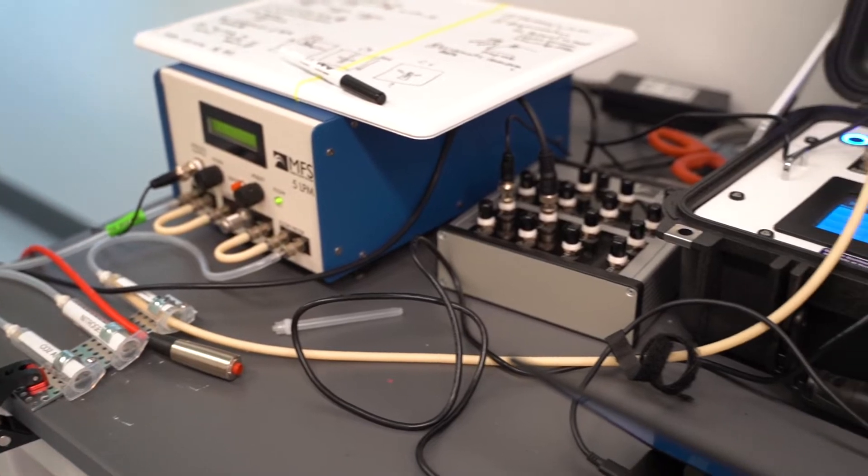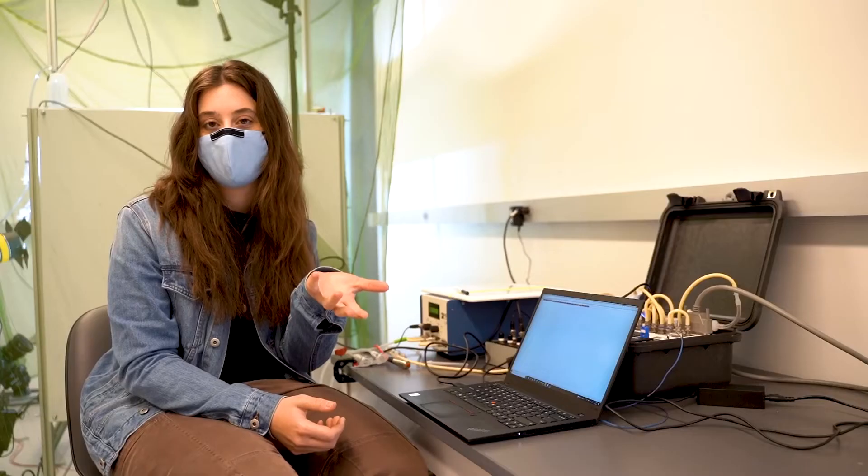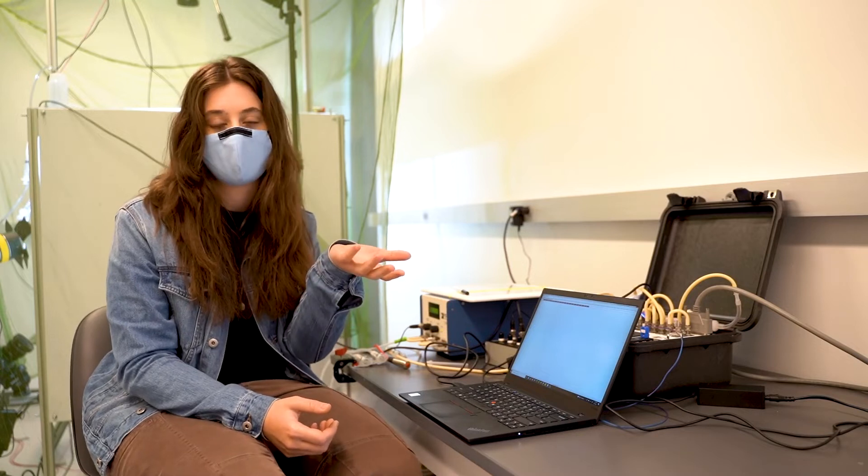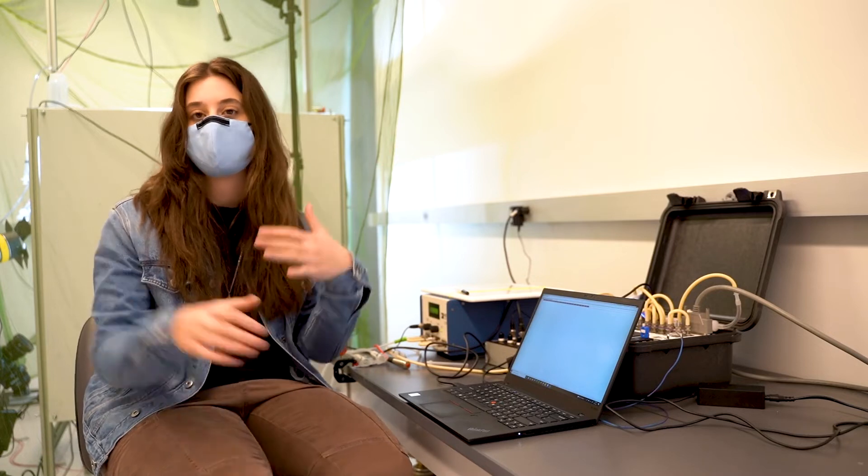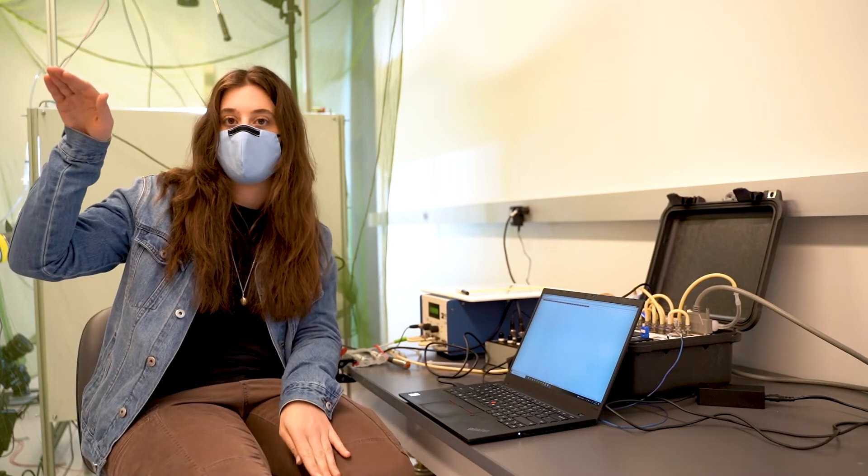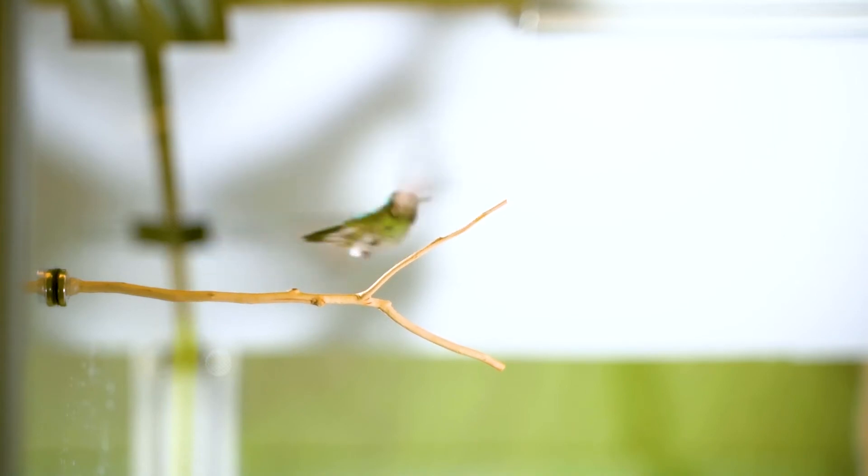We're also using some metabolism equipment. What it allows us to do is to measure the exhaled breath of the bird and how much energy it's consuming. So we can see how much oxygen is dipping between the environment versus when the bird feeds and how much the carbon dioxide is peaking in the bird's exhaled breath compared to the environment around us in here.